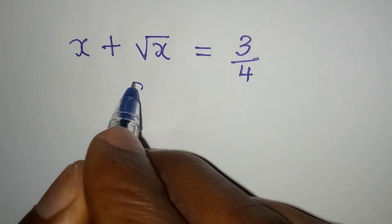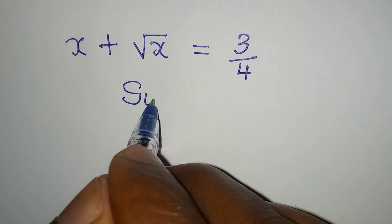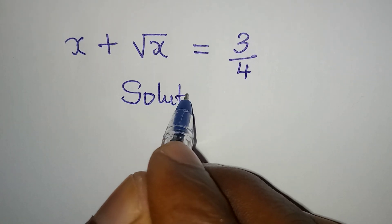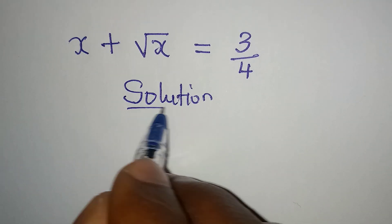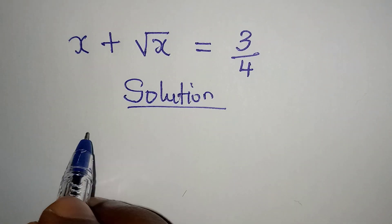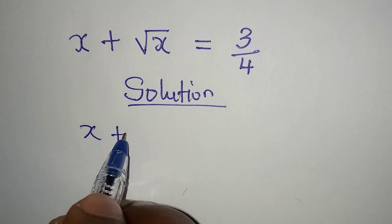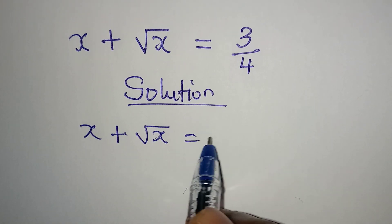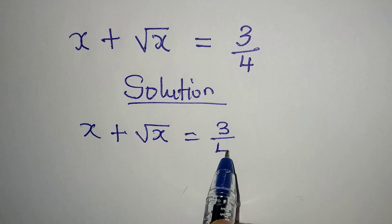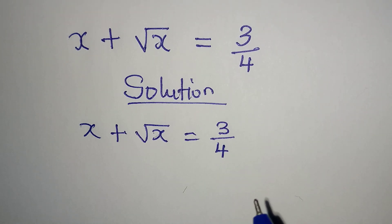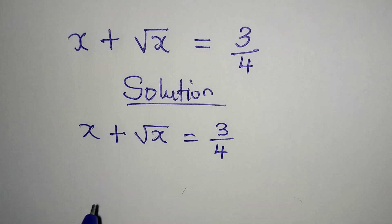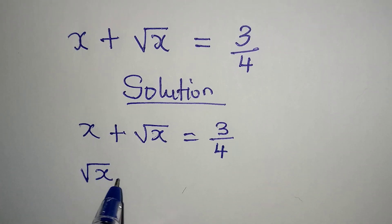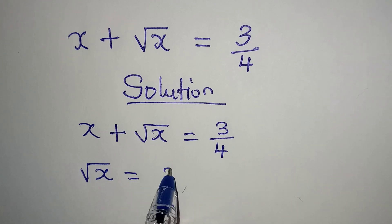Hello everyone, let's provide a solution to x plus square root of x equal to 3 over 4. The first thing is taking x to the right so that we have square root of x equal to 3 over 4 minus x.